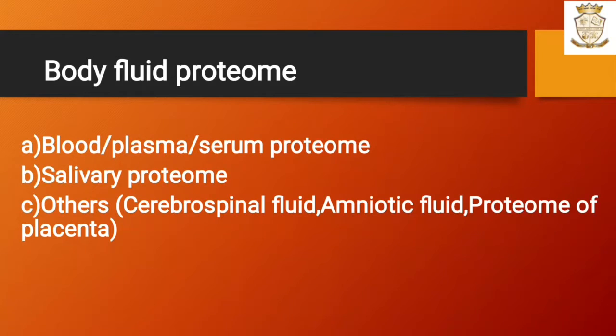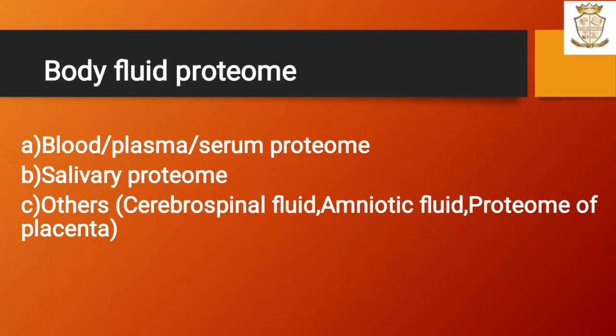The three types are: blood, plasma, and serum proteome; salivary proteome; and others — that is cerebrospinal fluid, amniotic fluid, and proteome of placenta.